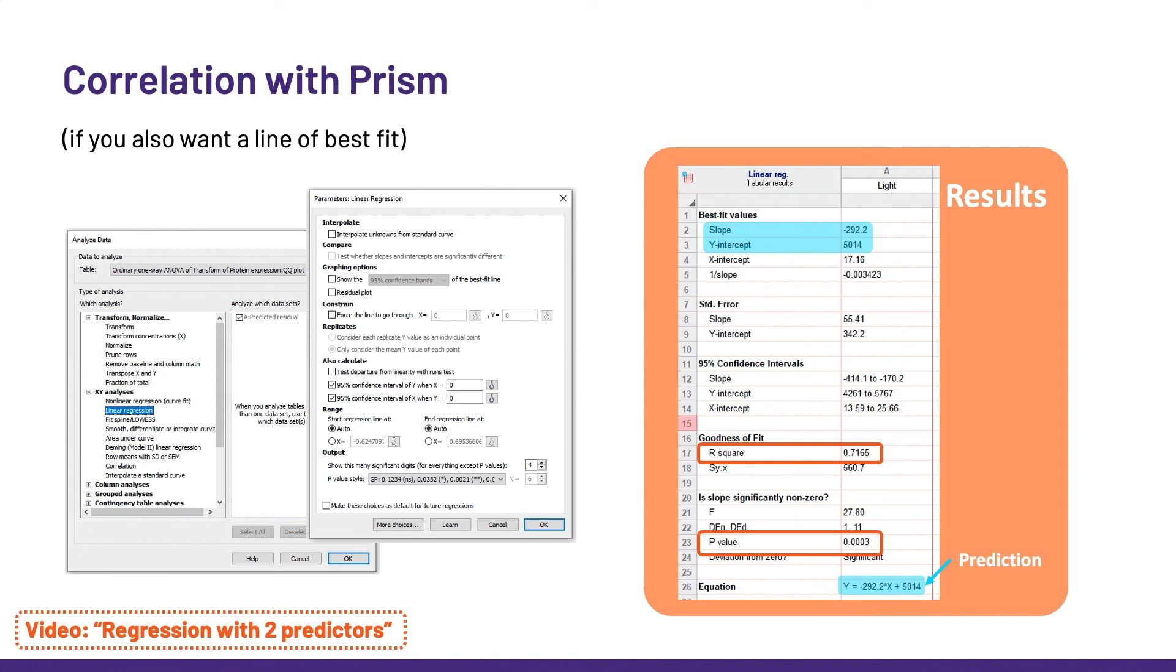We recognize r-squared and the p-value, and we also get the equation for the line of best fit with a negative slope as expected. So here we are talking about prediction, how we can predict Y when we know X. By the way, I explain more about r-squared and line of best fit in the video on regression with two predictors.